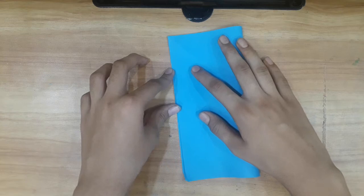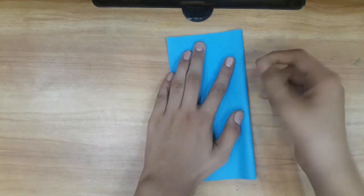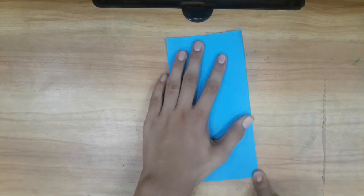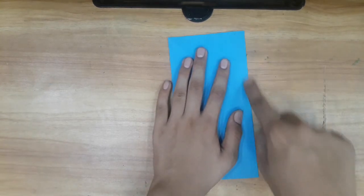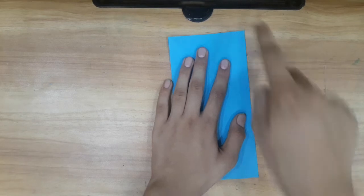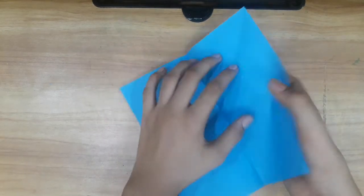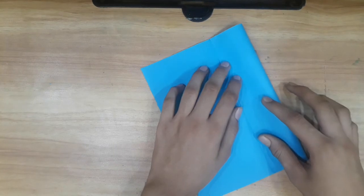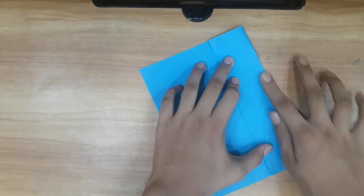Then you are able to see that I am using my thumb for making the lines crisp. Now we have to make this half fold into half once again like this.